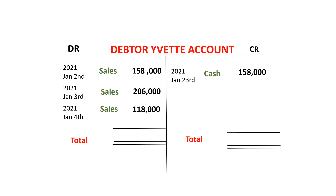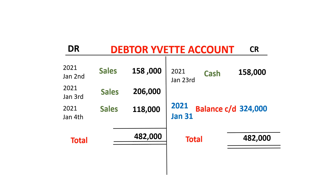If you take a look at your screen, you can see this account we've called Yvette. Looking at this ledger account, on the debit side it has those values, and on the credit side it has those values. From looking at this, you can see that the debit side is bigger than the credit side. It is 482,000, and so balancing this account means that the balance carried down is 324,000, which we put on the credit side. Then the balance brought down is also 324,000.